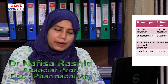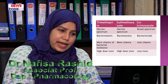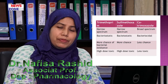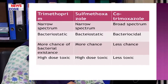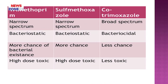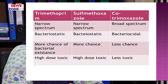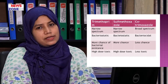What are the benefits of cotrimoxazole? When trimethoprim is narrow spectrum and sulfamethoxazole is also narrow spectrum, when they are combined as cotrimoxazole, it becomes broad spectrum. On the other hand, they are individually bacteriostatic, but when combined they are bactericidal. Individually they have a higher chance of bacterial resistance, but with cotrimoxazole there is less chance of bacterial resistance. Also individually they require higher doses, resulting in more toxicity, but when combined there is less toxicity.